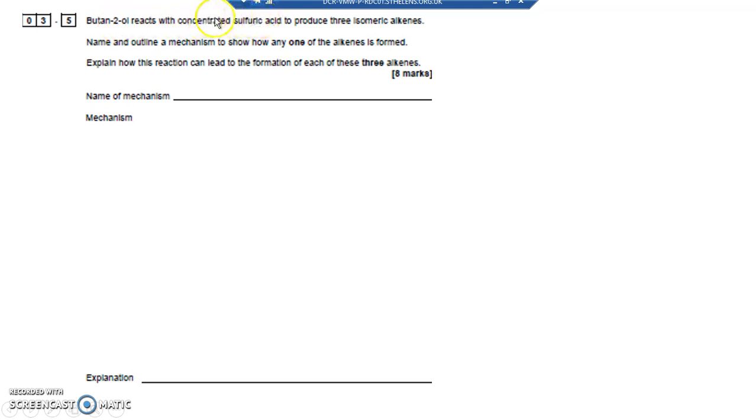It reacts with concentrated sulfuric acid. Remember, concentrated sulfuric acid removes water. The way it does this is it removes the OH off a carbon and off an adjacent carbon it takes an H. So it takes the OH off a carbon and on the carbon next to it, either to the left or the right, it takes an H.